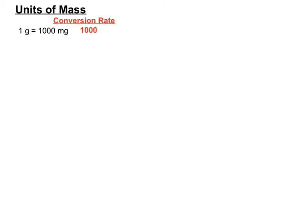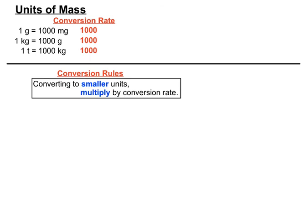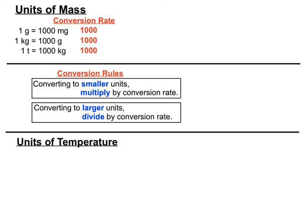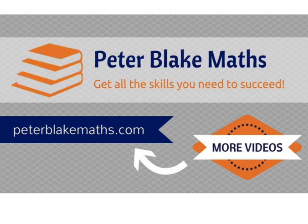Just to recap units of mass: we've got conversions between grams and milligrams, kilograms and grams, and tons and kilograms — all with a conversion rate of a thousand. Whether you multiply or divide by that thousand depends on which direction you're going. Conversion rules: converting to smaller units means multiplying; converting to larger units means dividing. For temperature, the basic unit is degrees Celsius. A nice straightforward conversion rate each time — get used to that method and it'll serve you well. All the best in your studies. For more help with maths, visit peterblakemaths.com.